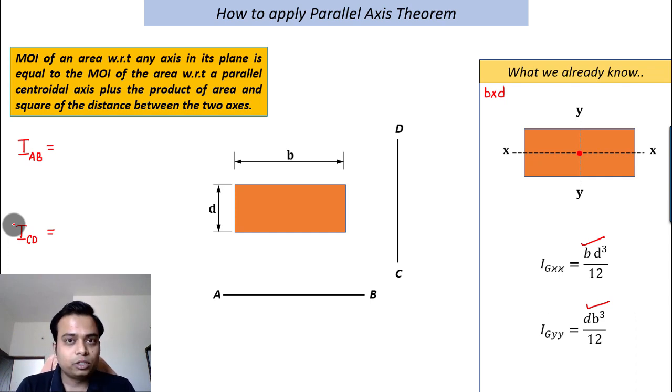The moment of inertia of an area with respect to any axis in its plane is equal to the moment of inertia of the area with respect to a parallel centroidal axis—this is an extremely important part—plus the product of area and the square of the distance between the two axes.